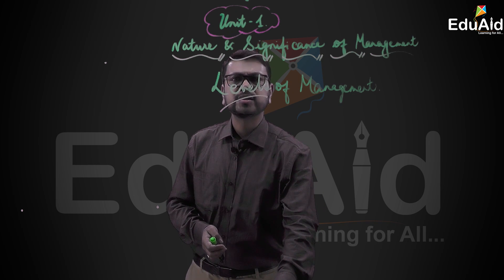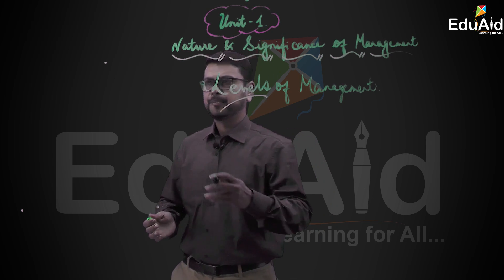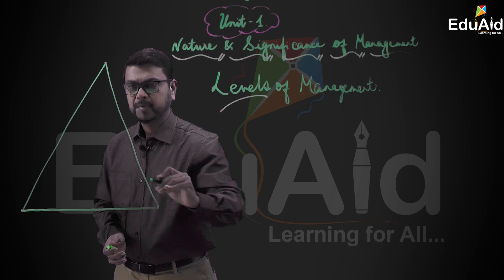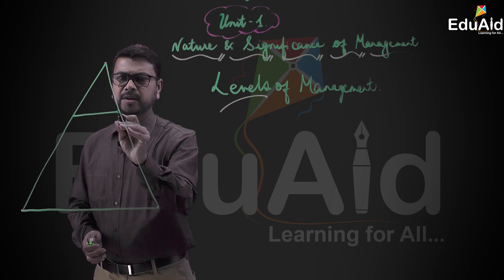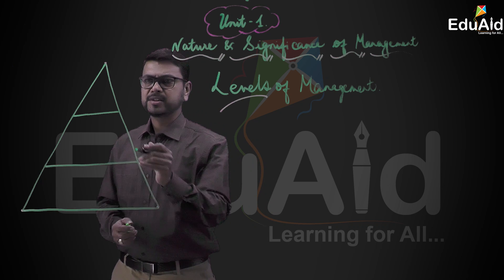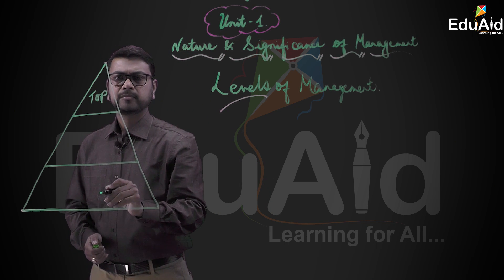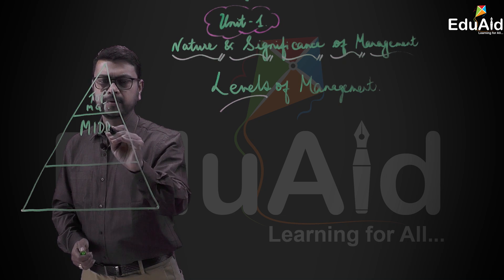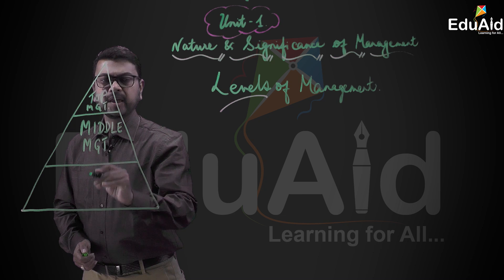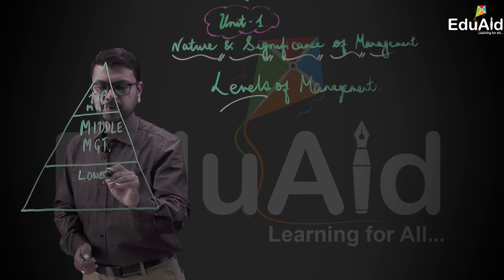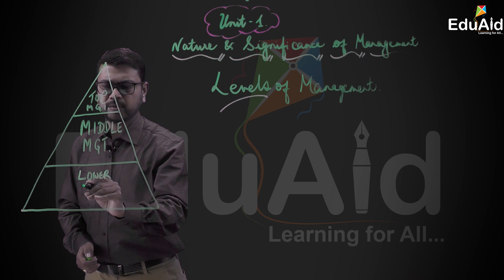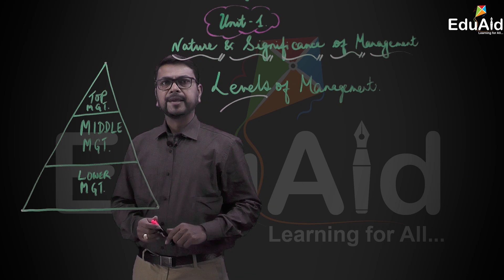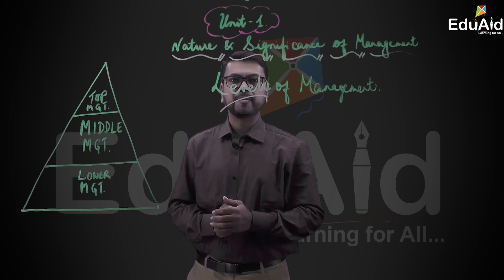Let us first understand the various levels of management. The broad classification is into three levels. The first level is called top management. The next level is called middle level management. And the lowest level is called lower management. Based on this classification, their designation and status is known.